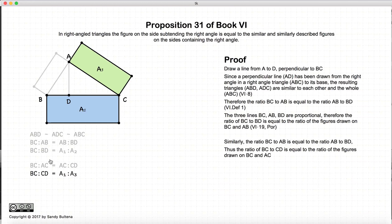So now we have this relationship. So again, if we look at the ratio of BC to CD, that will be equal to the area of two similar figures, the ratio of the area of two similar figures drawn on BC and AC. In other words, BC to CD is equal to the ratio of A1 to A3.